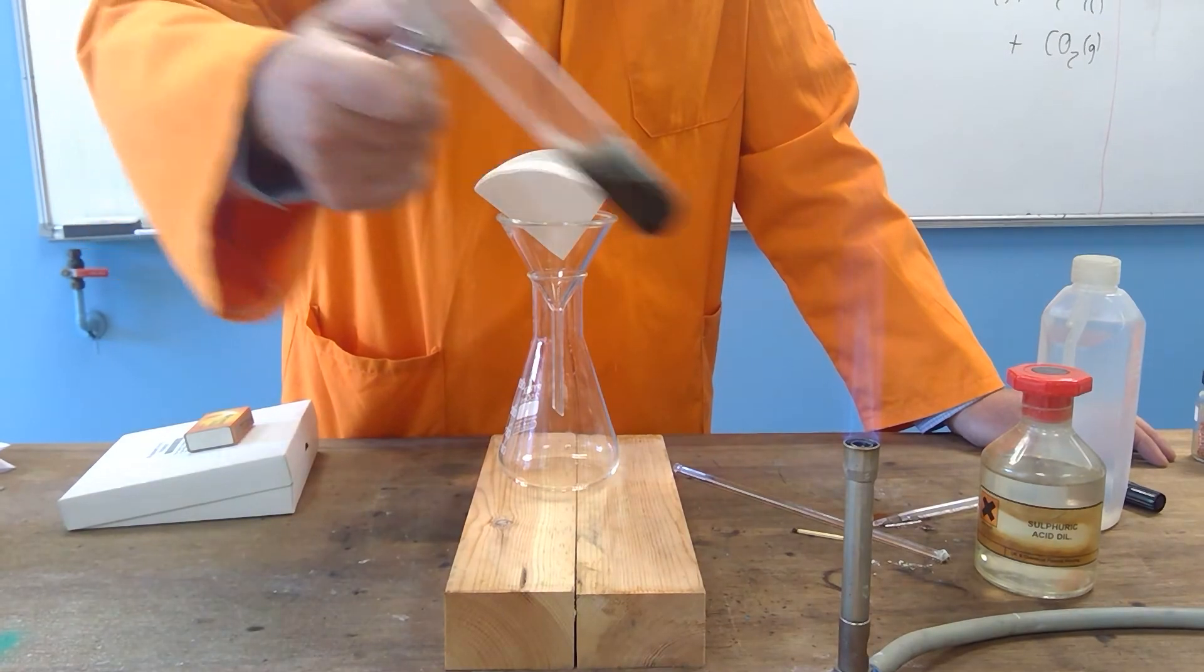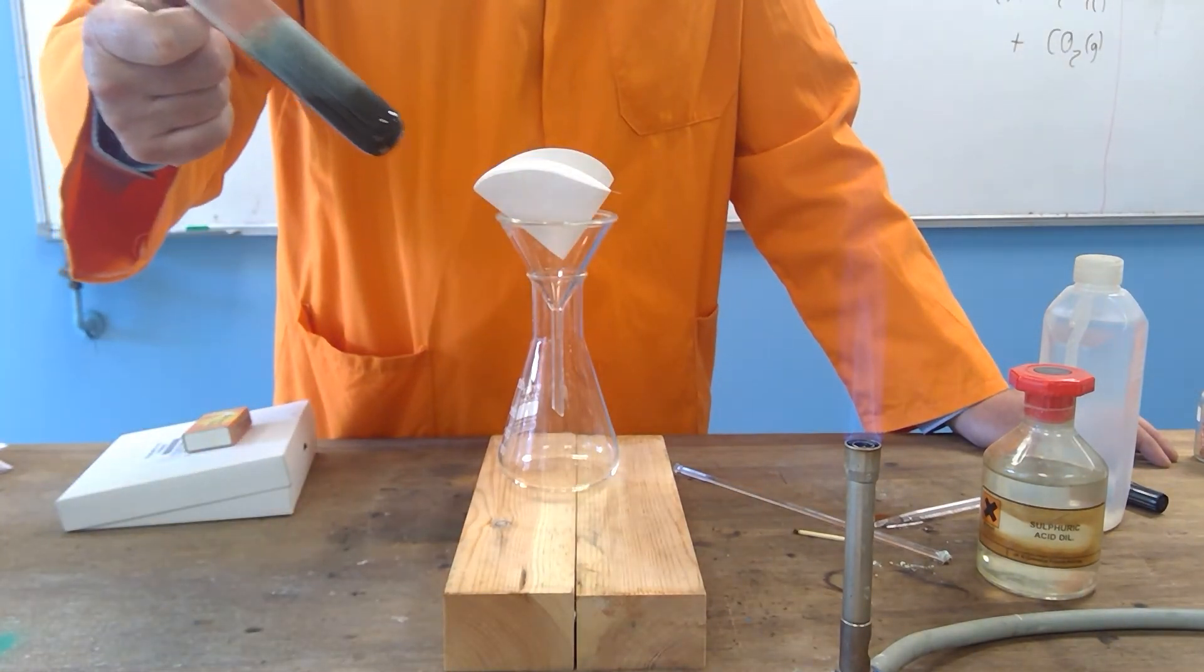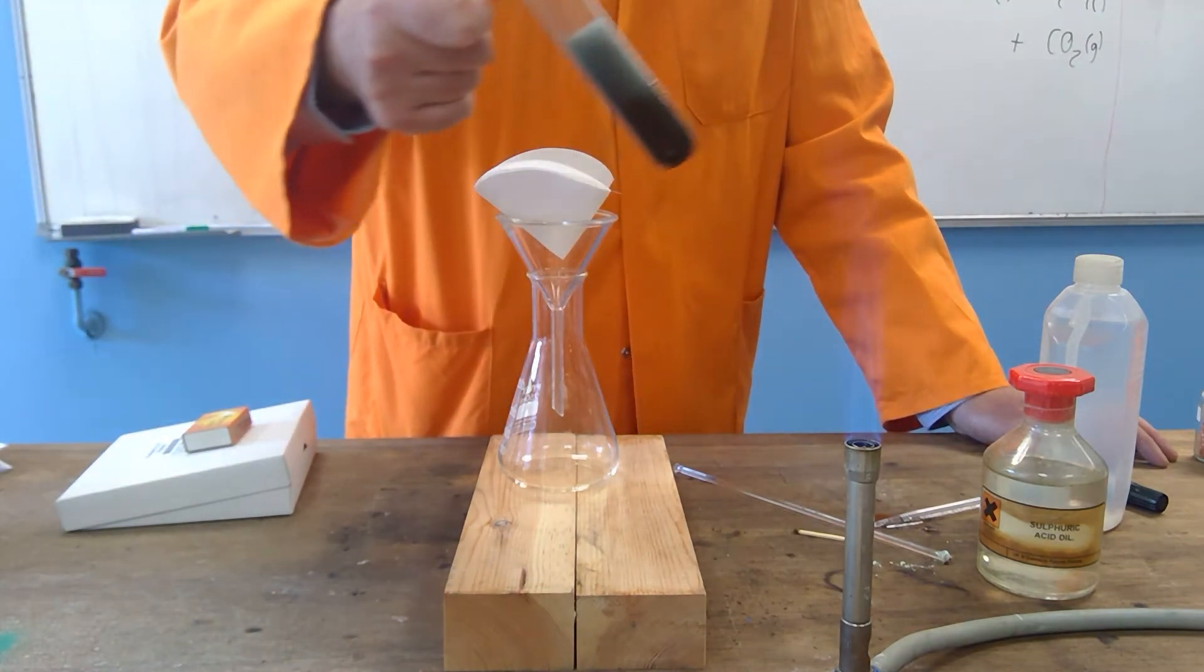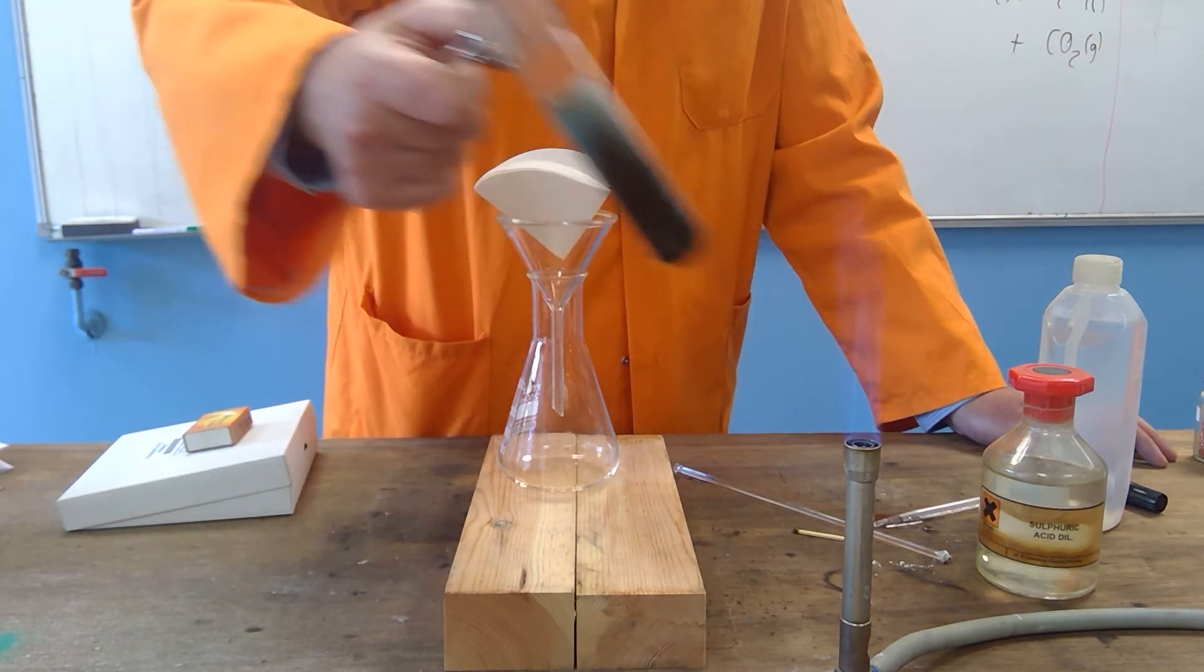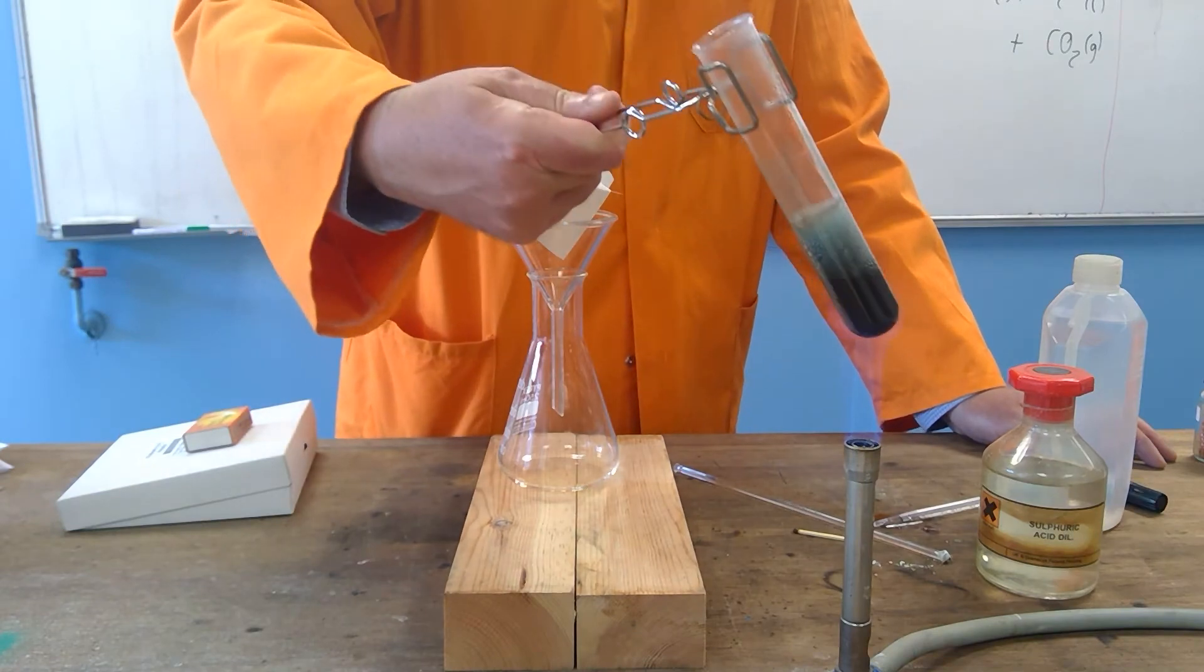This produces copper sulfate and water. So a metal oxide like copper oxide, plus an acid like sulfuric acid will make a salt. Notice how I take it out of the flame when it fizzes up, so you can actually feel the vibrations through the end of the tongs.